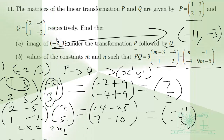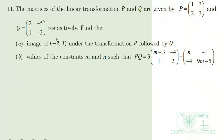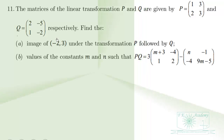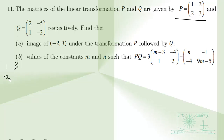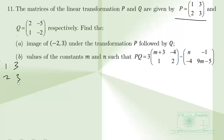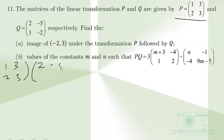Now for part B, we want to find the values of constants M and N such that matrix P times Q equals 3 times one matrix minus another matrix. Matrix P is [[1, 3], [2, 3]] and matrix Q is [[2, -5], [1, -2]].